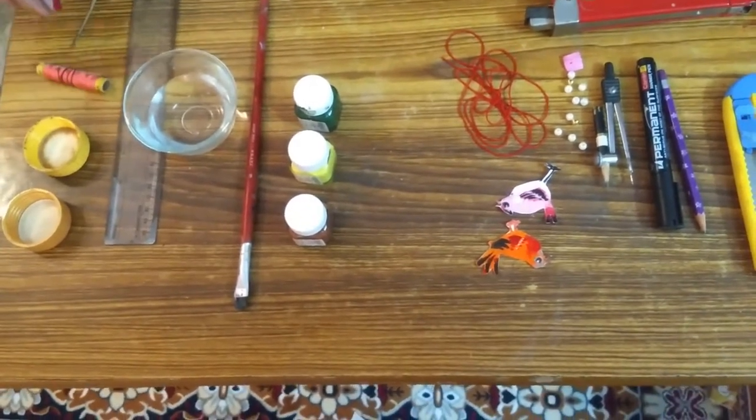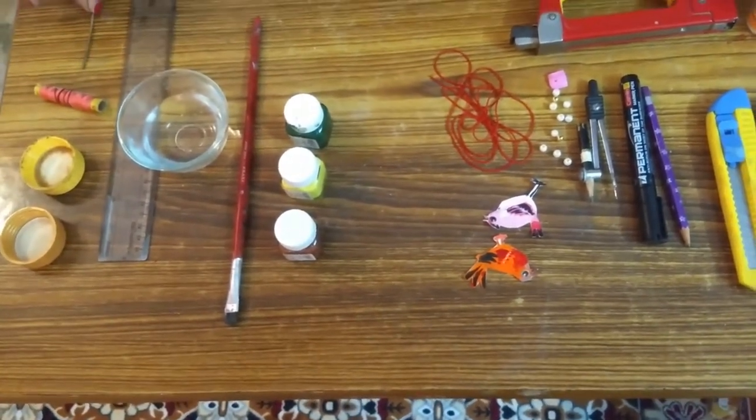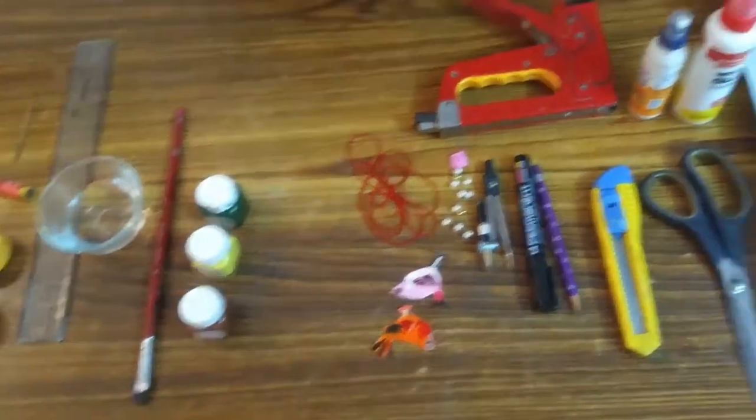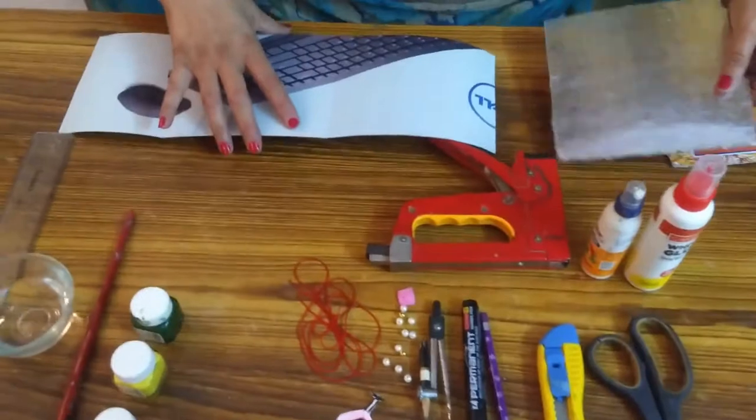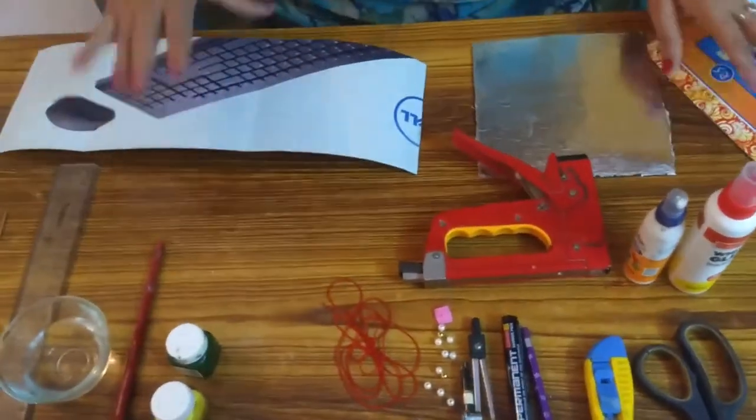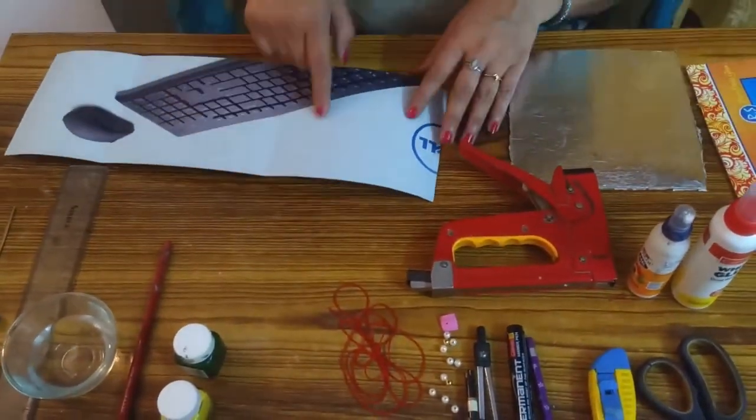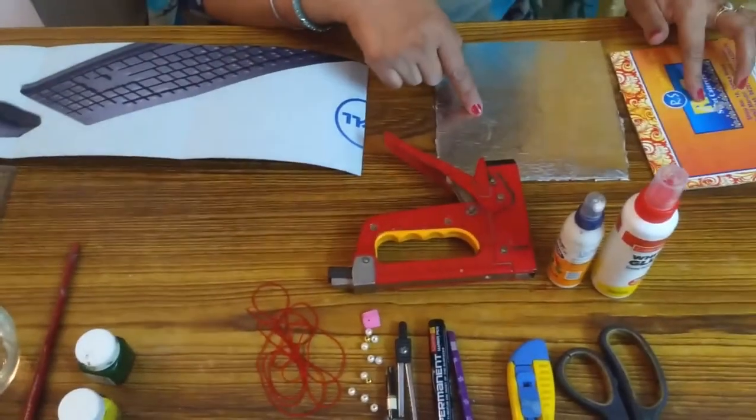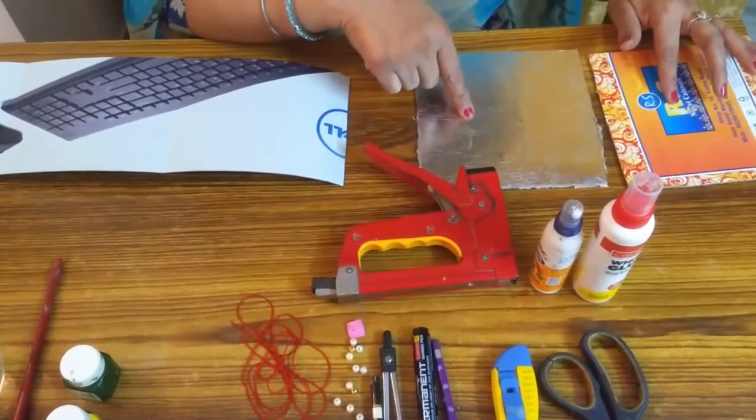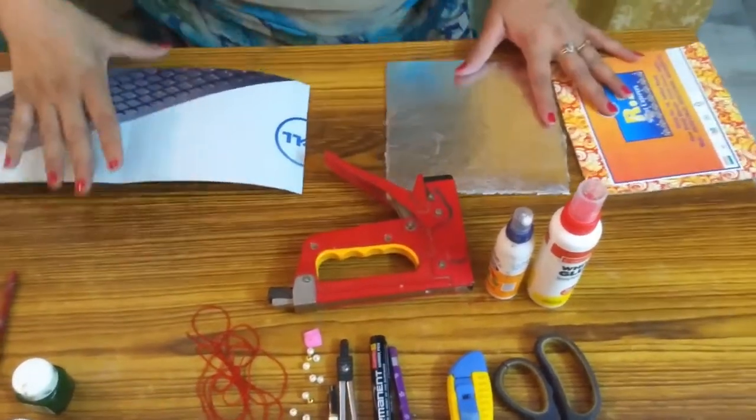First of all we will take and cut 3 cardboard pieces: one piece of 5.5 inches into 17 inches and 2 pieces of 6.5 inches into 6.5 inches. On the first piece of cardboard draw and cut a circle.